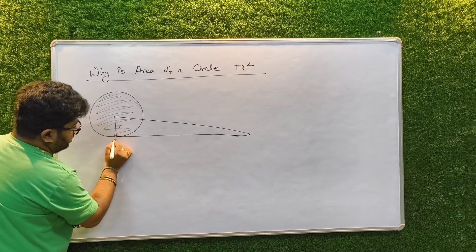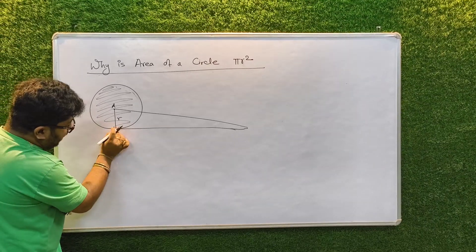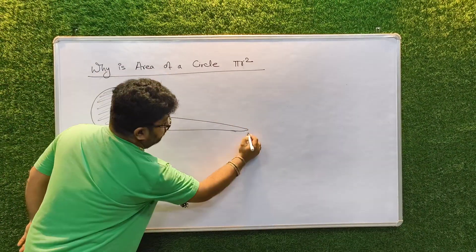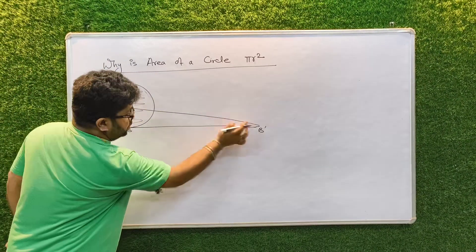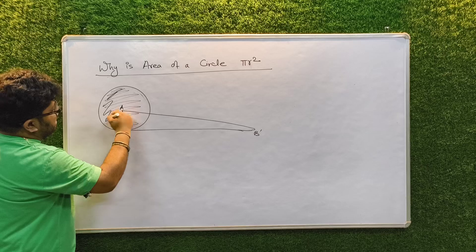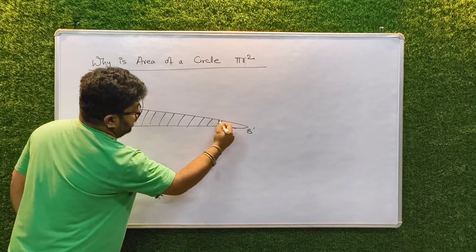Suppose this point is point A, this is point B and this point B is opened here and it comes here and becomes point B dash. This entire perimeter has fallen here. The entire circumference has fallen here. Then this area inside the circle will fall in this triangle, if you can imagine properly.